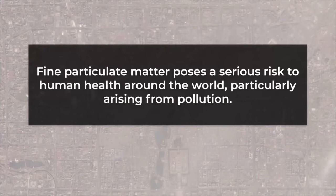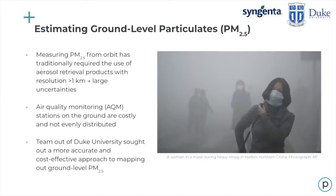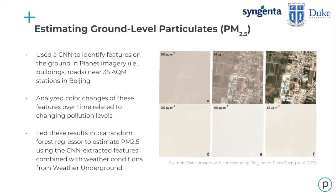You can also look at public health issues like air quality monitoring through satellite imagery. Fine particulate matter smaller than 2.5 microns — PM2.5 — poses a serious risk to human health, and a lot of it comes from pollution and human sources. Measuring PM2.5 from orbit has traditionally required aerosol retrieval products with resolutions greater than one kilometer, making ground-level estimates extremely coarse with large uncertainties. Air quality monitoring stations on the ground are very expensive and not evenly distributed. A team from Duke University sought to create a more accurate and cost-effective approach using a combination of satellite imagery, air quality monitoring stations, and convolutional neural networks.